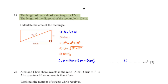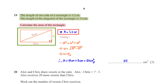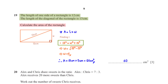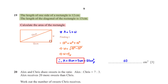The length of one side of a rectangle is 12 cm and the length of the diagonal is 13 cm. Calculate the area of the rectangle. To find the width w, we apply Pythagoras' theorem: 13² = w² + 12², giving w = 5 cm. So the area is 12 × 5 = 60 cm².